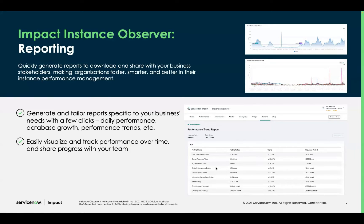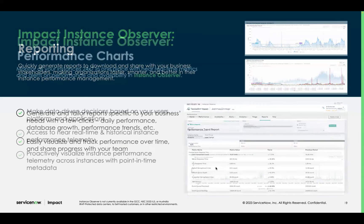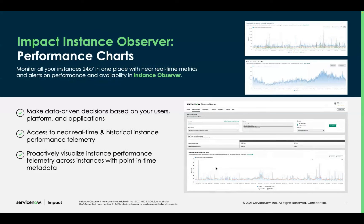The first component is our reporting module — a dashboard-like experience that collects some of the data and provides it to you in a matter of clicks. I'll demonstrate that in a few moments. And then the performance charts: this is where you really start to dig into that instance performance telemetry. You're going to have over 90 different telemetry types — we continue to add to that portfolio — with the ability to go back in time, understand those trends, and see behaviors within the platform.